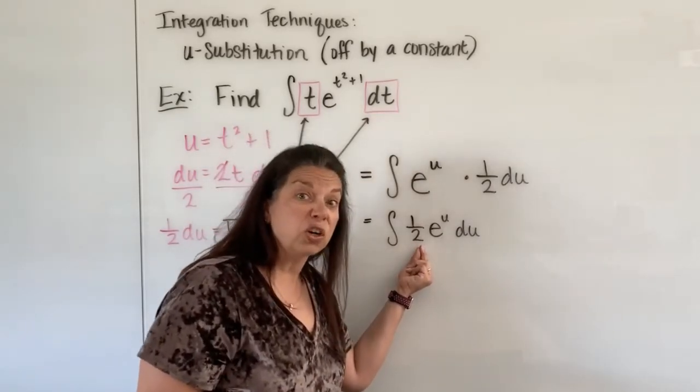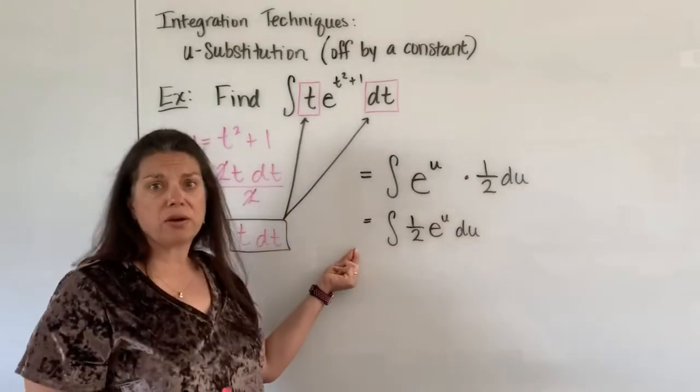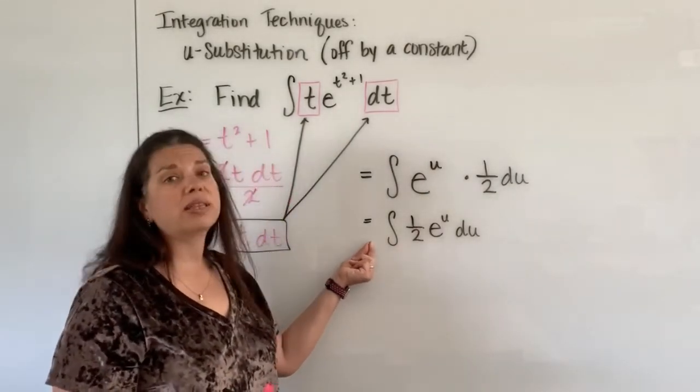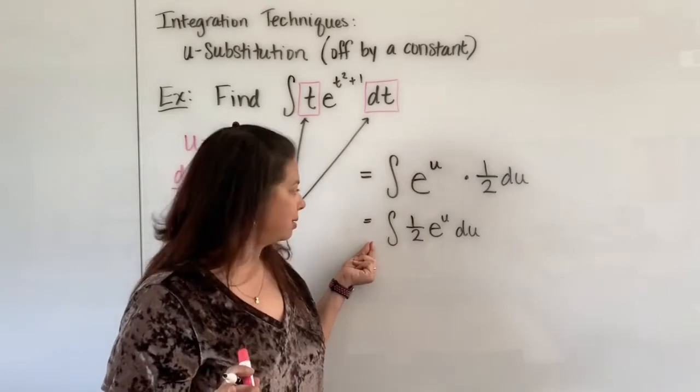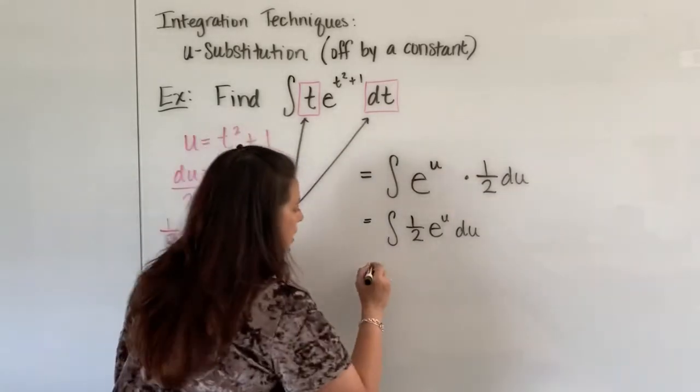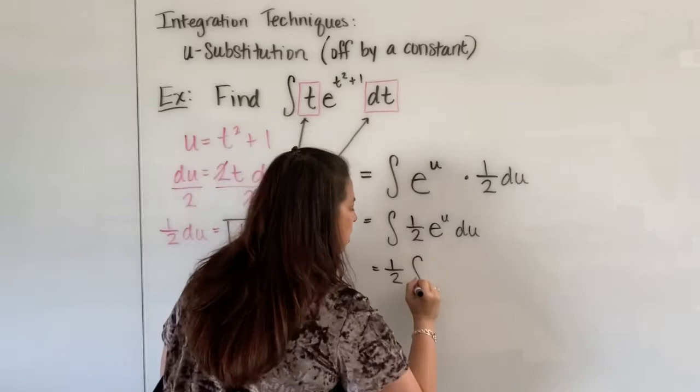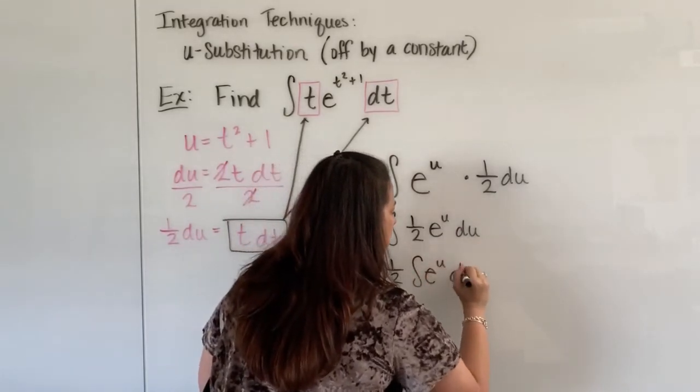And maybe that helps you recognize that in fact one of the properties for integrals allows us to take that 1 half even further. We can take it all the way out of the integral symbol. We're allowed to do that with constants and only constants. So we'll take the 1 half and put it out front next. So we have 1 half times the integral of e to the u du.